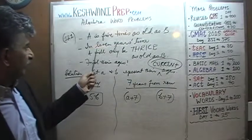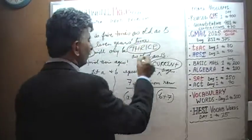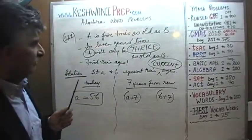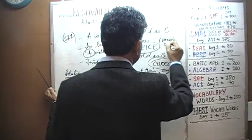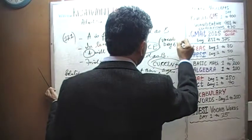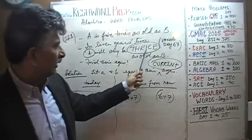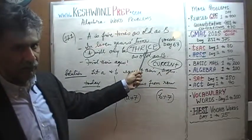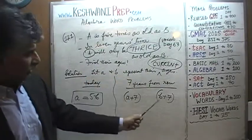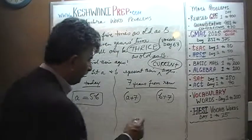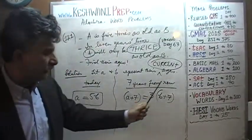From the second sentence: in seven years' time, A will be thrice — that is, three times — as old as B. We learned the word 'thrice' in our vocabulary lessons; it's a fancy way of saying three times as much. So seven years from now, A plus 7 equals 3 times (B plus 7).